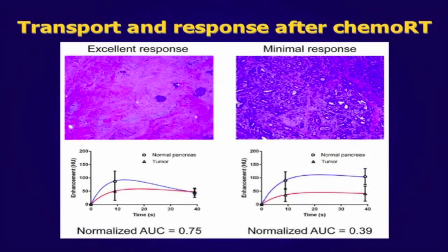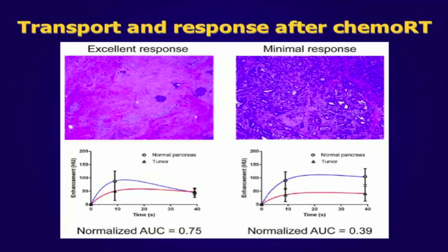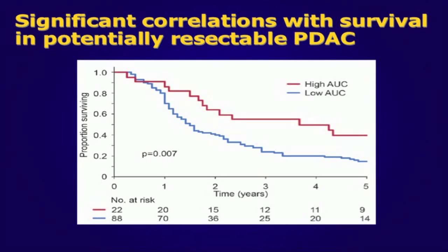We extended this correlation between CT-derived transport properties and drug delivery to clinical outcomes. We hypothesized that the variable transport properties could describe the variable pathological response after gemcitabine-based chemoradiation for patients with resectable pancreatic cancer. Two cases are shown here of patients who received the same preoperative therapy but had very different pathological responses and also very different pre-therapy transport properties from their CT scans. When we analyzed 110 patients treated with gemcitabine-based chemoradiation on two Phase II protocols, we found that the pre-therapy CT-derived transport properties correlated with the pathological response to therapy and the overall survival of the patients.